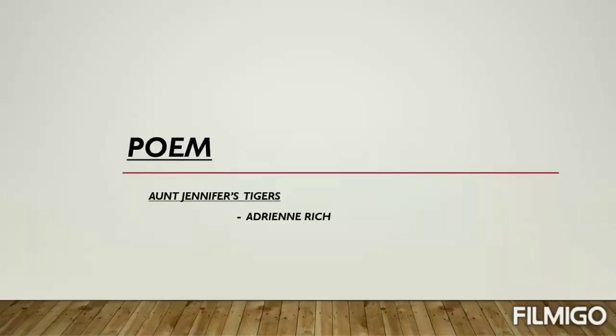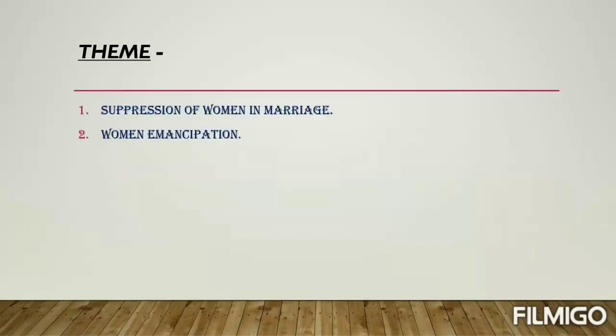This is a Class 12th poem — Aunt Jennifer's Tigers — written by Adrienne Rich. Remember, this poem is very important from an exam point of view. This poem deals with the suppression of women in marriage and women emancipation. These two themes are what this poem revolves around.